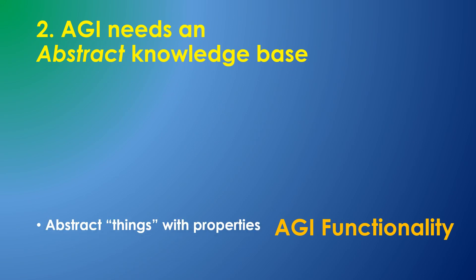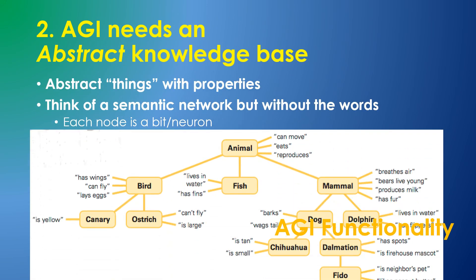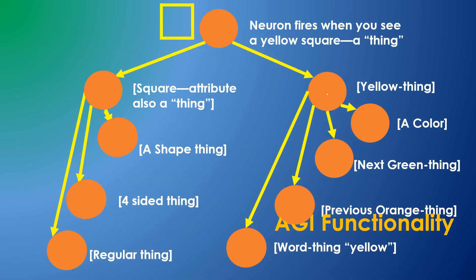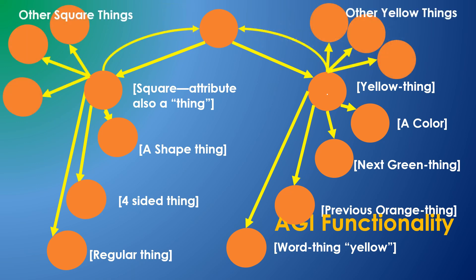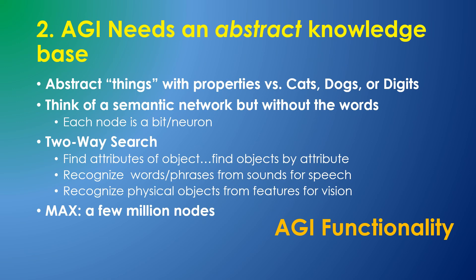We need more abstraction. Think of a semantic network, but without the words — each node is just a bit, representative of a single neuron. We humans know about things and their attributes independent of language. We can see a yellow square and understand its attributes of yellowness or squareness. Alternatively, we can consider yellow and recall other yellow things or square things, independent of whether we know the words yellow and square. When you consider how the knowledge base might be constructed from neurons, the neurons available for this function limit the human knowledge base to millions of nodes, well within current computational abilities.